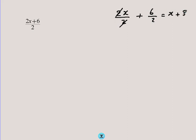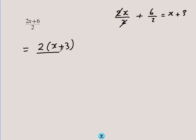So the answer is x + 3. But this is not how we would deal with this fraction because it's written in shorthand form, so we don't have to write it in that detailed way. The correct approach is to take a common factor — we make sure the numerator is factorized. Here, 2x + 6 = 2(x + 3), so now we can cancel the 2 with the 2, giving us x + 3.